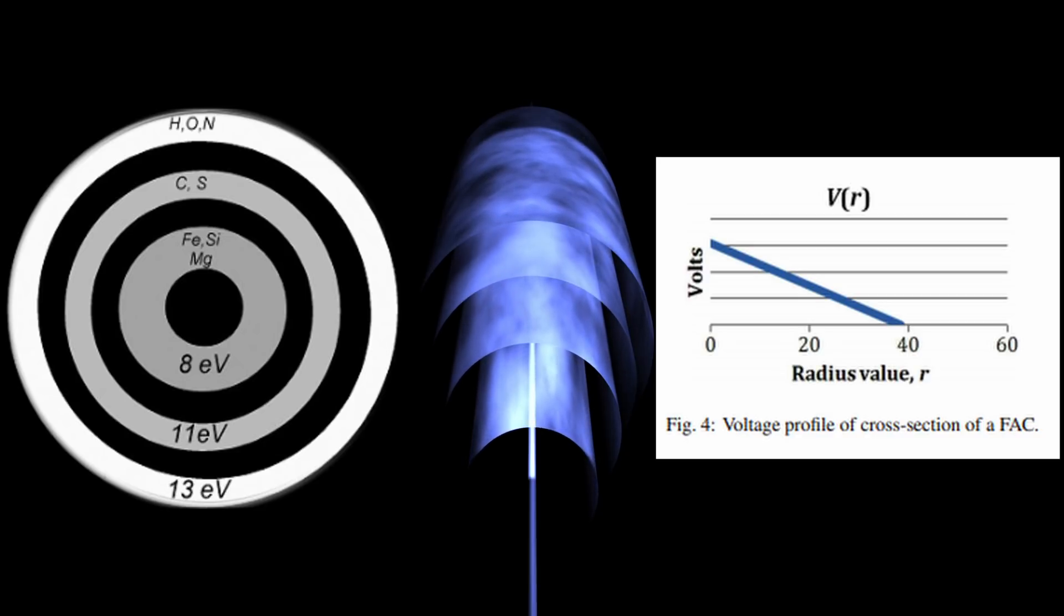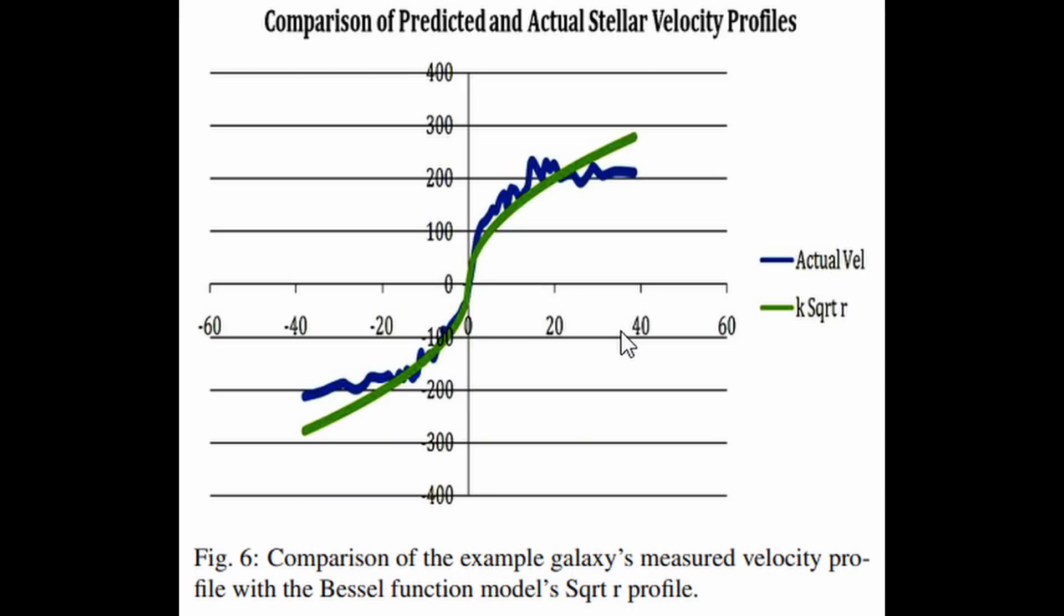If we examine the rotation curve for this model where the material follows the electric field we do find it is a better match compared to gravity only with no dark matter.